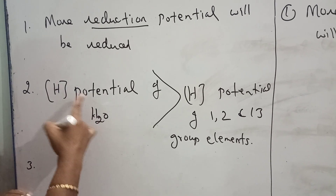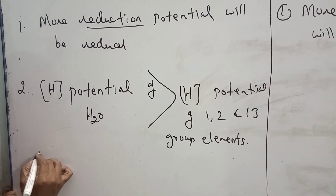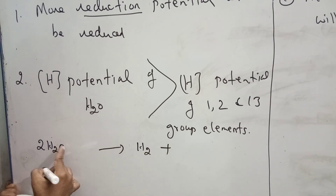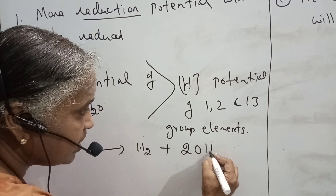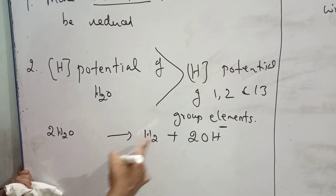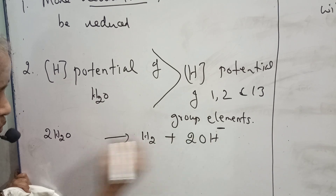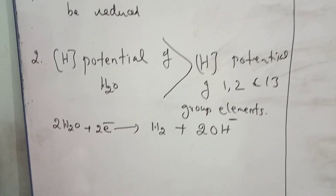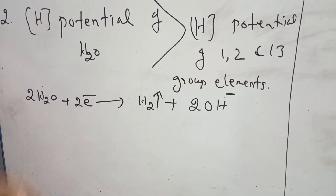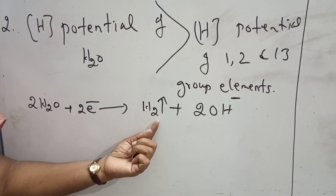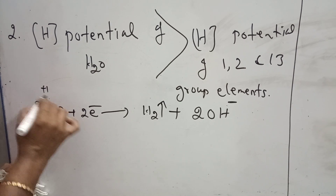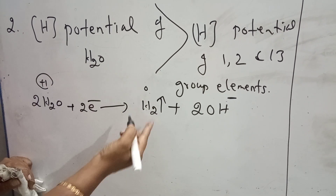For the reduction of water, I will write the equation. Two molecules of water get reduced — it gives H₂ gas and OH⁻ ions. There are four hydrogens, giving two H₂. This is the reaction going on when water is getting reduced. This reaction is very important and is frequently asked in competitive exams. During reduction, water gives hydrogen — verify with gain of electron; oxidation state of H goes from +1 to 0. Water is reduced. Everything is correct.